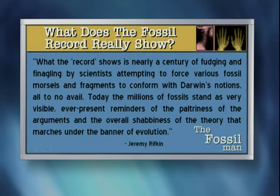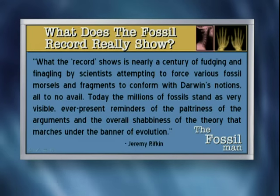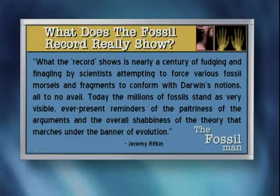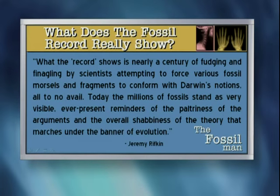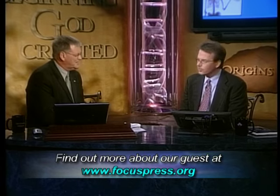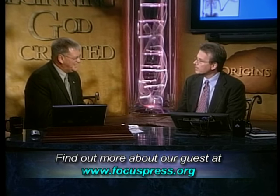Let me show you one last quote. Jeremy Rifkin, when asked what the fossil record really shows, summed it up well when he said: 'What the fossil record shows is nearly a century of fudging and finagling by scientists attempting to force various fossil morsels and fragments to conform with Darwin's notions, all to no avail. Today the millions of fossils stand as very visible, ever-present reminders of the paltriness of the arguments and the overall shabbiness of the theory that marches under the banner of evolution.' Do you see in this evolutionary tree one shred of evidence for a missing link between apes and man? It's not just the missing link that's missing. The entire chain is missing. We have apes, we have man, we don't have a chain connecting them.